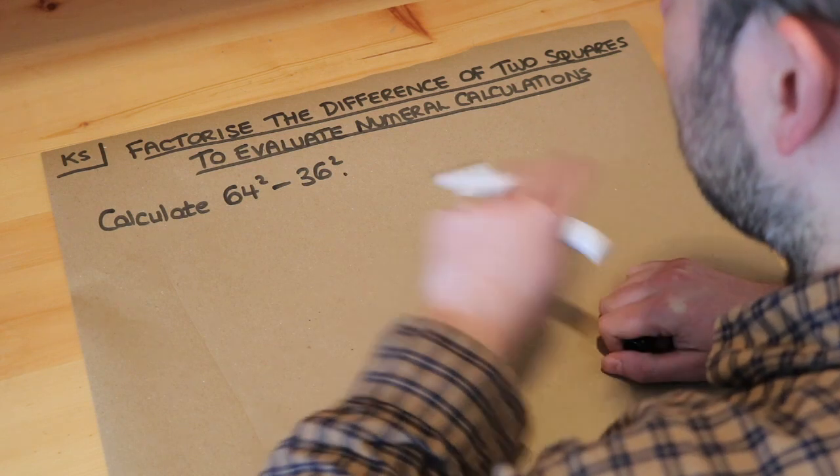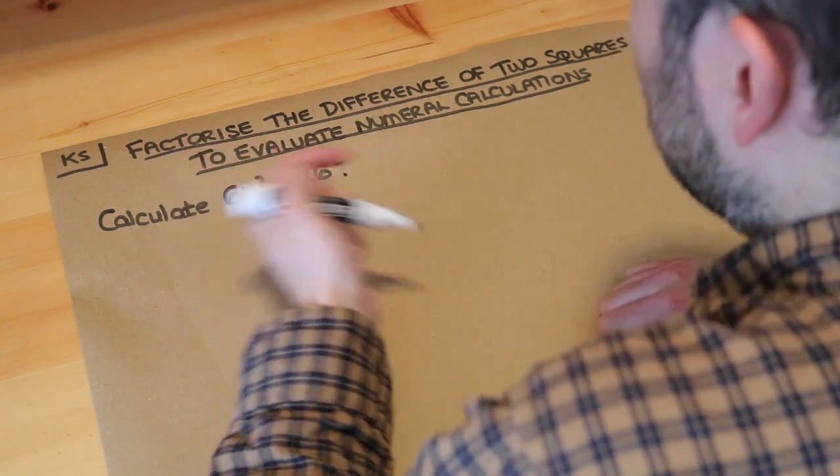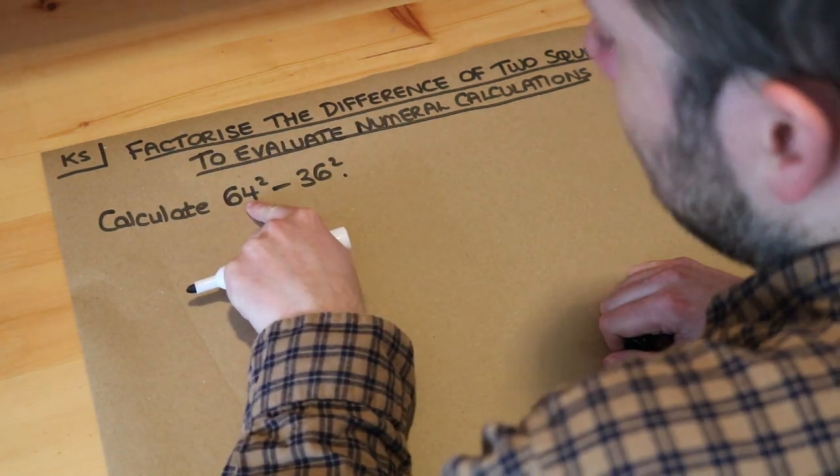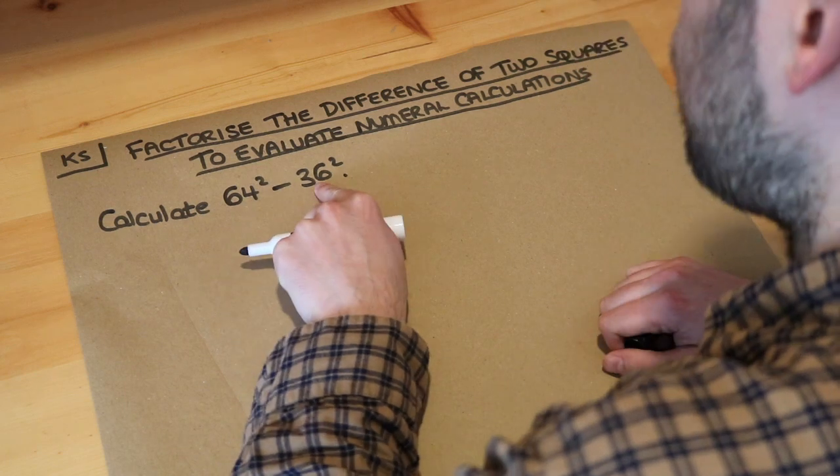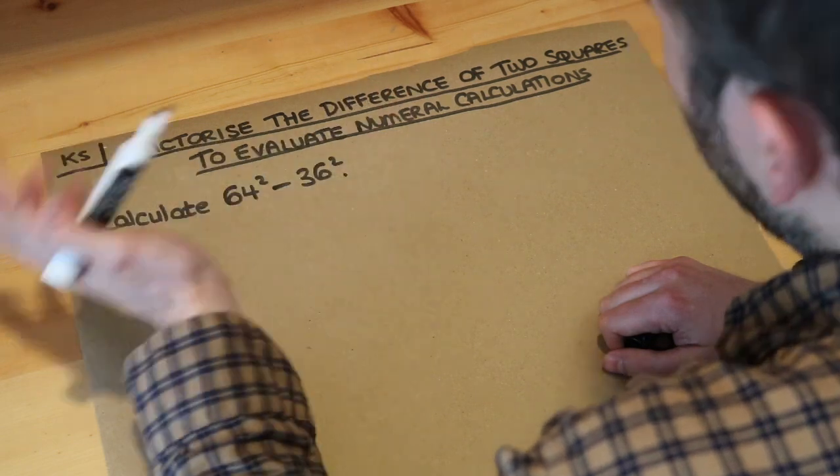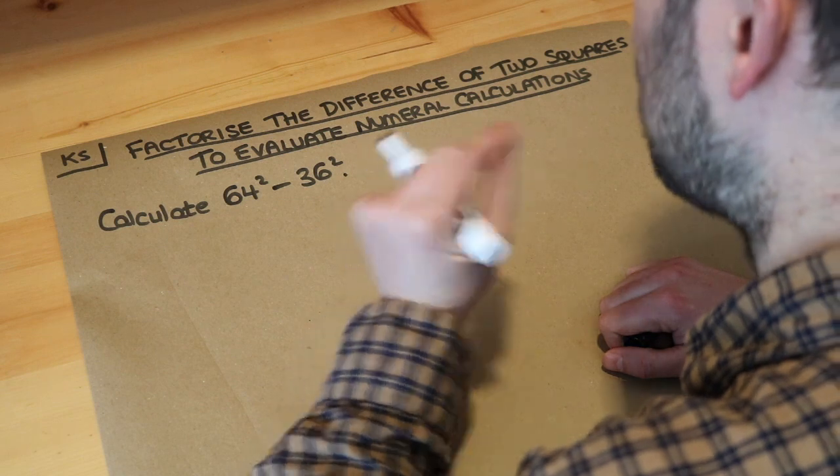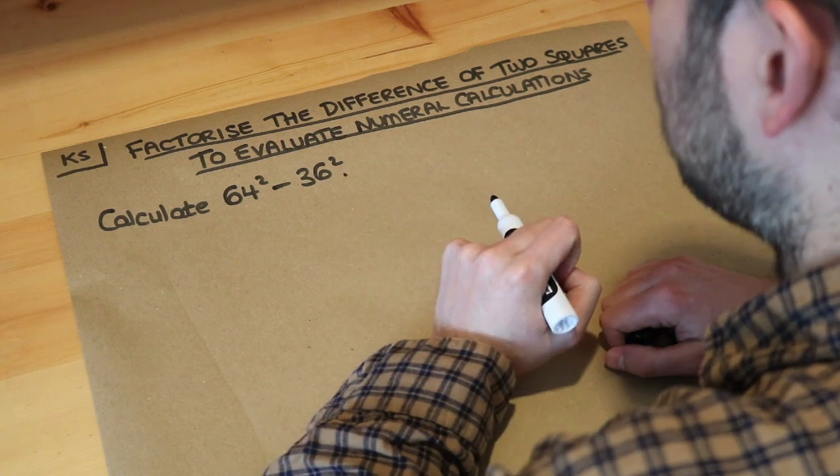In this case we've got 64 squared minus 36 squared. What we could do is work out what 64 squared is, that's 64 times 64, and what 36 squared is, that's 36 times 36, using long multiplication and then subtract those two results. But there's actually a cleverer way we could do this by using factorization.